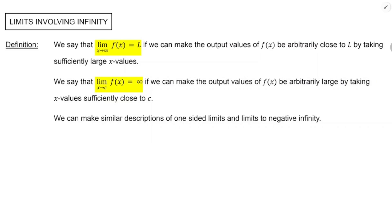Here are the definitions we're going to take for these things at the AP Calculus level. We'll say that the limit as x approaches infinity of f of x equals L — meaning we're approaching a horizontal asymptote y equals L — if we can make output values of f of x be arbitrarily close to L by taking sufficiently large x values. For a vertical asymptote, the limit as x approaches c of f of x equals positive infinity if we can make the output values of f be arbitrarily large by taking x values sufficiently close to c.